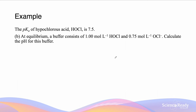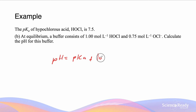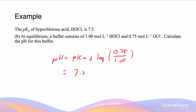In this next example, the buffer consists of 1 mol/L of HOCl and 0.75 mol/L of OCl⁻. The question asks us to calculate the pH of this buffer. Using the Henderson-Hasselbalch equation, pH = pKa + log([A⁻]/[HA]) = 7.5 + log(0.75/1). Plugging this into a calculator gives 7.5 − 0.12, which equals 7.38. The answer has 2 significant figures, so we give the pH to two decimal places.